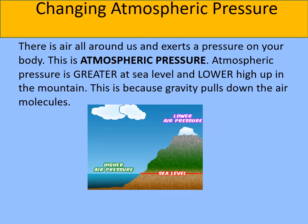All around us there are millions of billions of air particles and they are pushing on us and on everything else — this is what we call atmospheric pressure. If we go to the top of a mountain, there isn't as much air at that height compared to sea level, because the force of gravity is pulling the air molecules down. At a mountain like Mount Everest, the air is very very thin, which is why people attempting to climb it carry oxygen tanks. Atmospheric pressure basically decreases as you go higher above sea level.